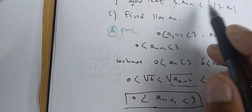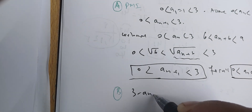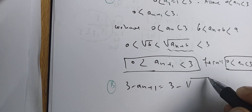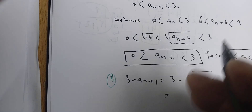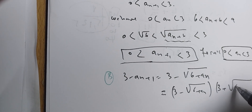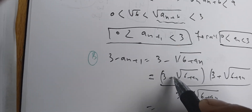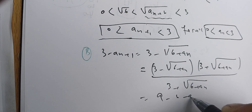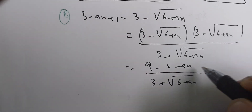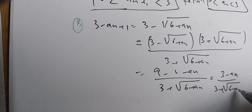Next, we show that 3 − aₙ₊₁ < (3 − aₙ)/3. We write 3 − aₙ₊₁ = 3 − √(6 + aₙ), then multiply and divide by the conjugate (3 + √(6 + aₙ)). The numerator becomes 9 − (6 + aₙ) = 3 − aₙ, giving us (3 − aₙ) / (3 + √(6 + aₙ)).